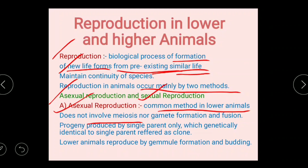Meiosis and mitosis are the two types of cell division. Meiosis forms the haploid gametes because it involves division of germ cells or reproductive cells. In asexual reproduction, there is no meiosis, which means there is no production of gametes and no fusion of gametes.